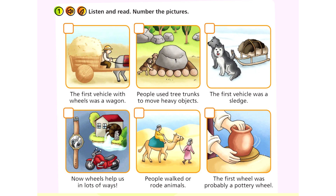4. Scientists think that the first wheel was probably a pottery wheel. 5. The first vehicle with wheels was a simple wagon. 6. Now wheels help us in lots of ways.